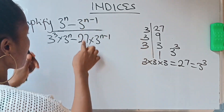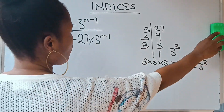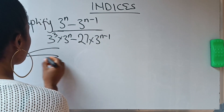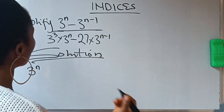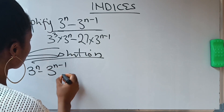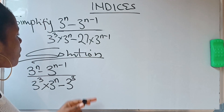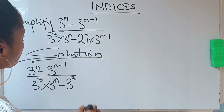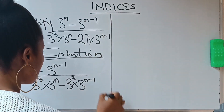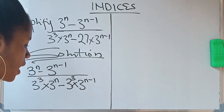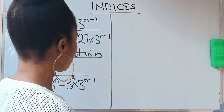So I'm now going to rewrite this and replace 27 with 3 raised to the power of 3, so that everything here will be in base 3. This is our solution. Our question will look like this: 3 raised to the power of n minus 3 raised to the power of n minus 1, all over 3 raised to the power of 3 times 3 raised to the power of n, minus 3 raised to the power of 3. So I'll replace 27 with 3 raised to the power of 3 times 3 raised to the power of n minus 1.